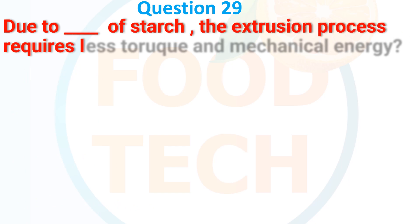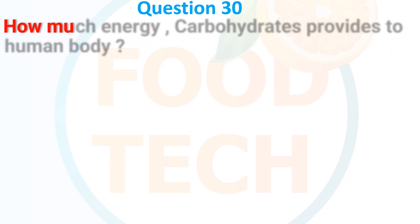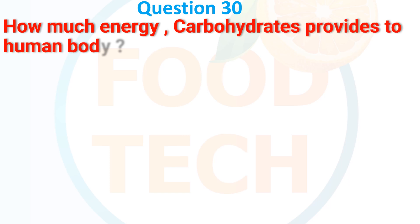Question 29: Due to disruption of starch in the extraction process, which process requires less torque and mechanical energy? A. Gelatinization, B. Retrogradation, C. Hydrolysis, D. Dextrinization. The answer is A. Gelatinization.